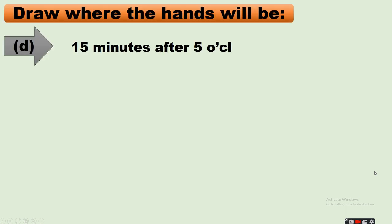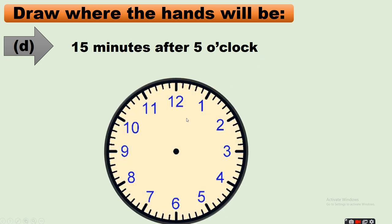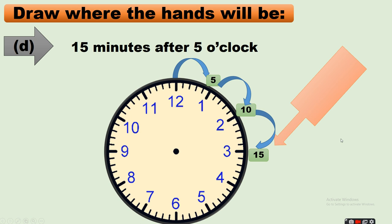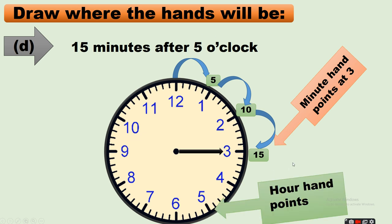Next: 15 minutes after 5 o'clock. It is already 5 o'clock — now 15 minutes after: 5 minutes, then 10 minutes, then 15 minutes. That means our minute hand will be at 3. So the minute hand points at 3 and the hour hand points at 5.